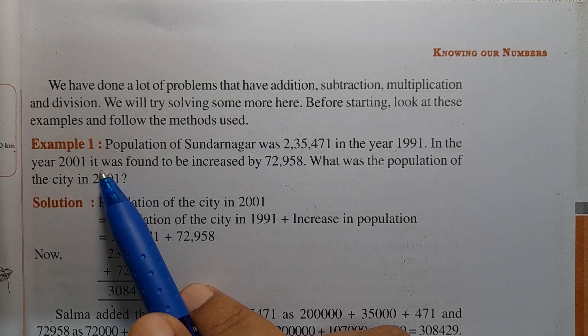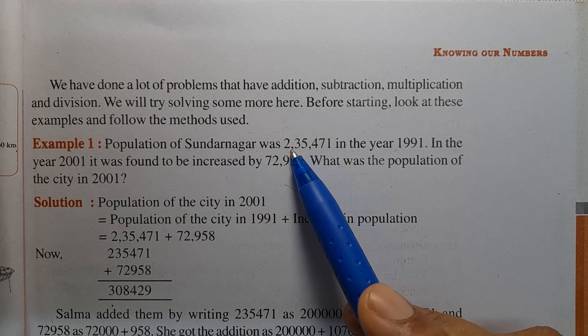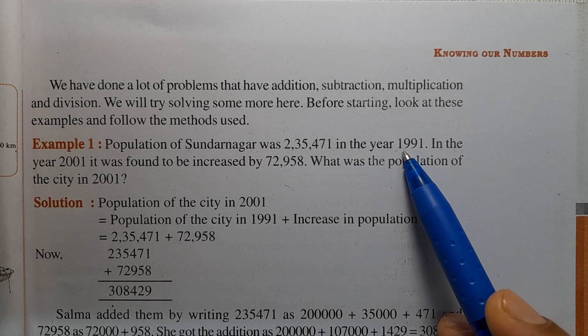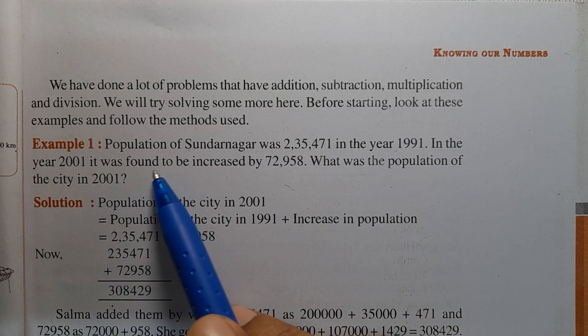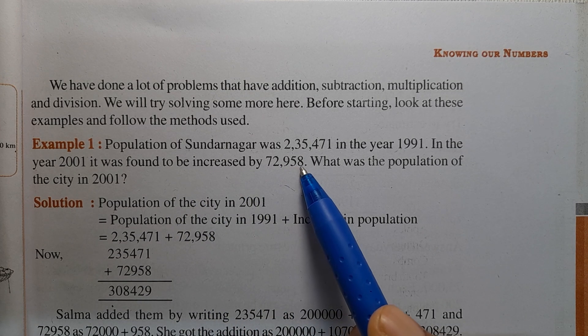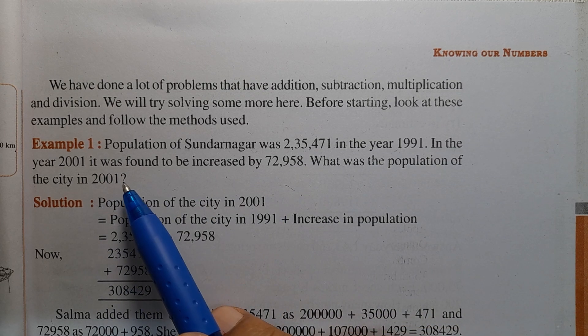Example 1: Population of Sundarnagar was 2,35,471 in the year 1991. In the year 2001, it was found to be increased by 72,958. What was the population of the city in 2001?